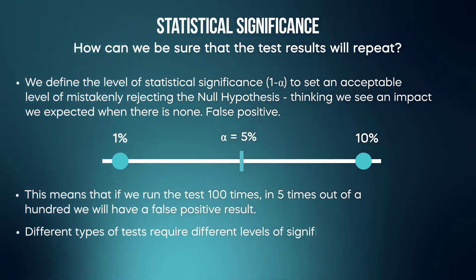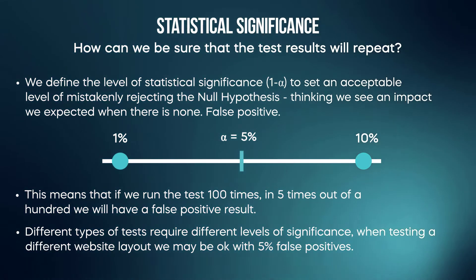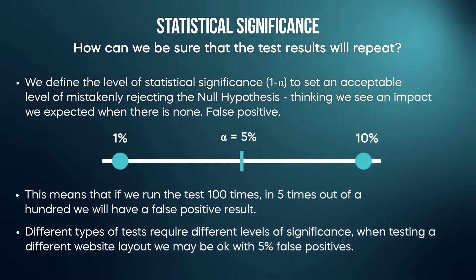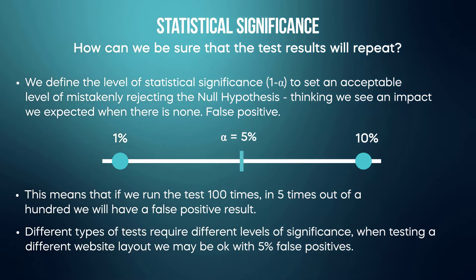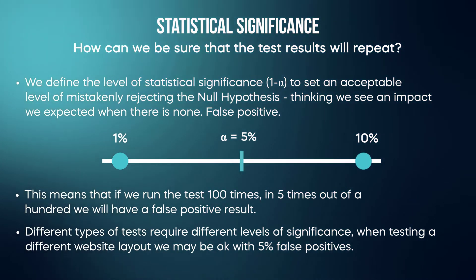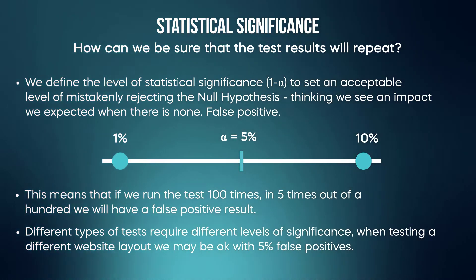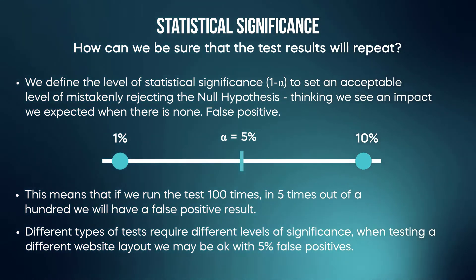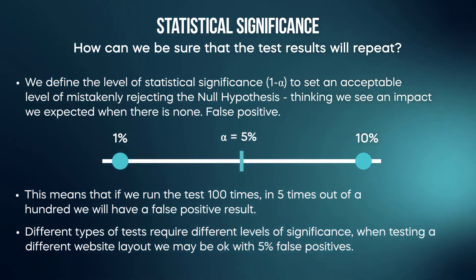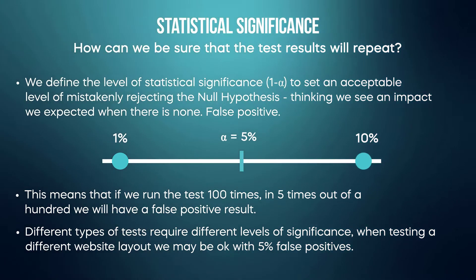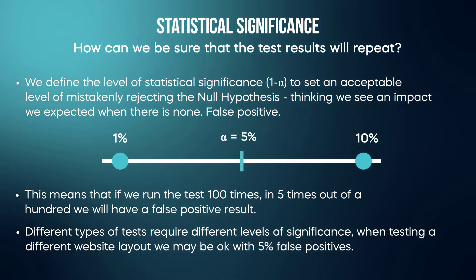Different types of tests require different levels of significance, and it's very likely that you will be asked during your interview why we chose a statistical significance of 95 percent. When testing a different website layout or a new feature, we may be okay with 5 percent of false positives. The trade-off is between how long we have to run the test, how many users need to be exposed, and how high we set the level of statistical significance.